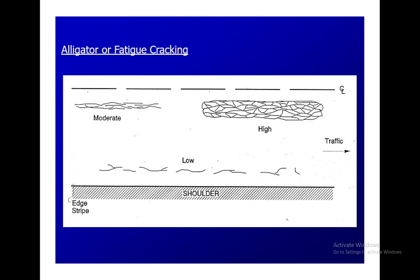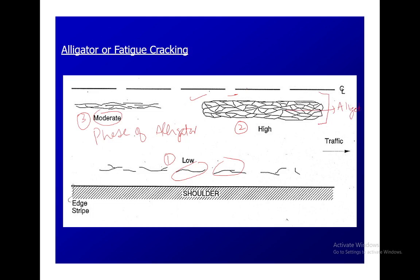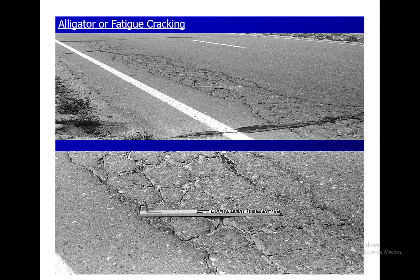Alligator cracking occurs in the wheel path. It starts at a very low level, then reaches a moderate level, and then a high level. When it reaches the high level, it looks exactly like the back of an alligator — that's why we call them alligator cracks. The crack pattern refers to the crack on the asphalt that looks like the back of an alligator.